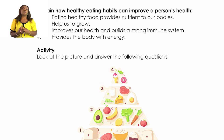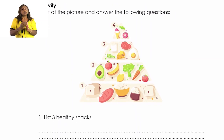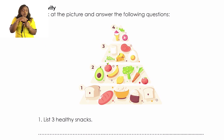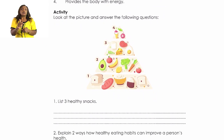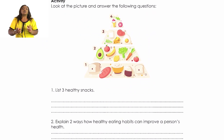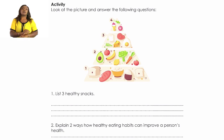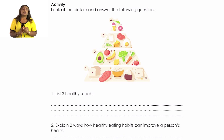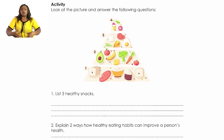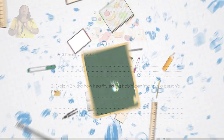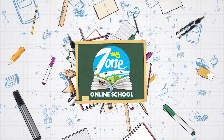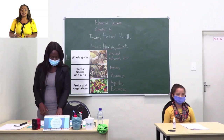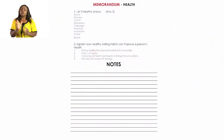Now we are going to do an activity. You must be able to list the components of a healthy snack and explain how healthy eating habits can improve a person's health. Look at the picture and answer the following questions. Number one: list three healthy snacks. Number two: explain two ways how healthy eating habits can improve a person's health. Let's turn to page 18 — you will find the memorandum of the activity you just did.